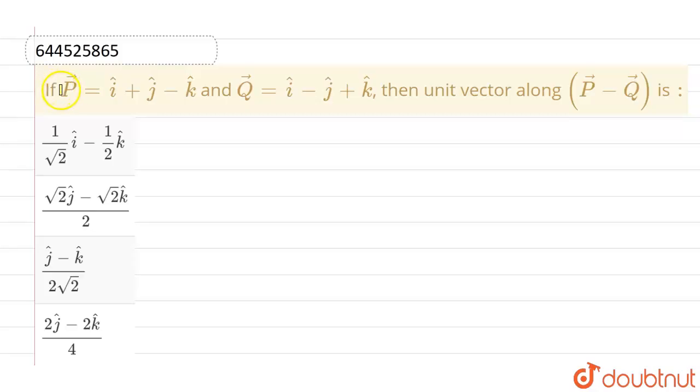Hello everyone. If we talk about this question, the given question is: if P vector is given as i cap plus j cap minus k cap, and Q vector is given as i cap minus j cap plus k cap, then a unit vector along P vector minus Q vector is—and these are the given options.